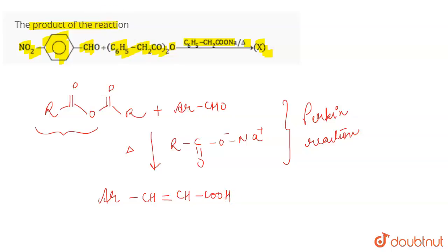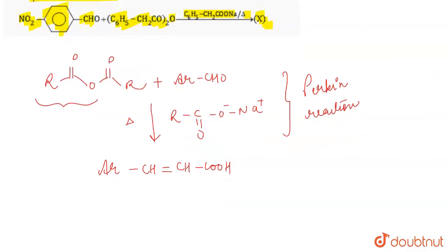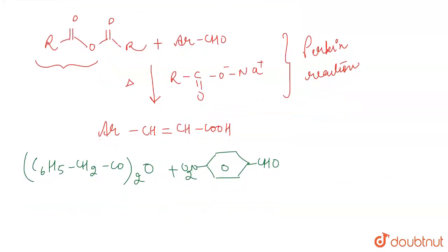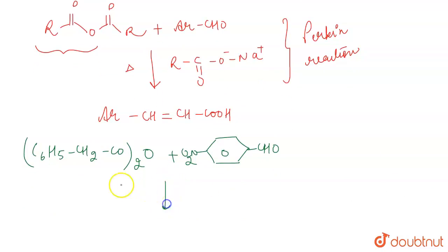Now if you look at the reactants that are given to you, you're given C₆H₅-CH₂-CO-O-CO-CH₂-C₆H₅, which is the acid anhydride, plus an aromatic aldehyde which is NO₂ and CHO group, and this is treated with the sodium salt of the same acid: C₆H₅-CH₂-COONa.